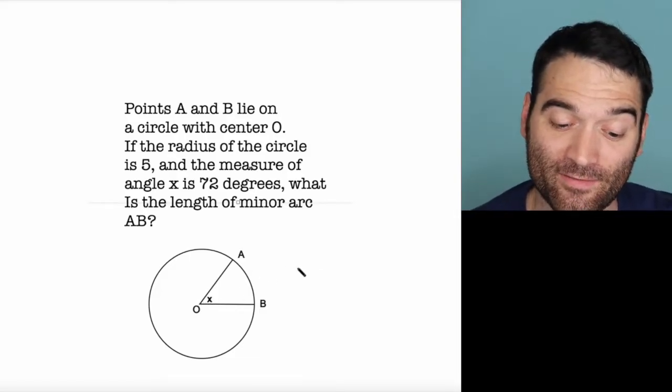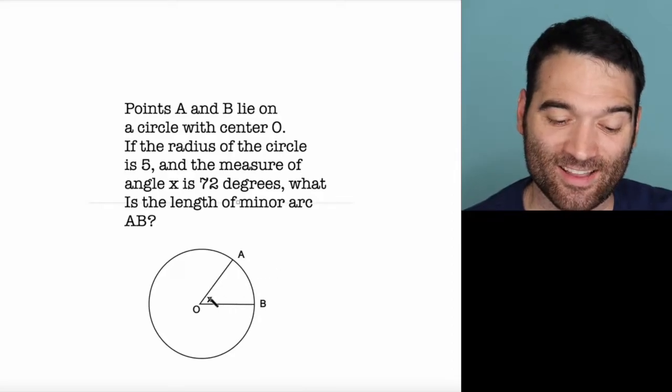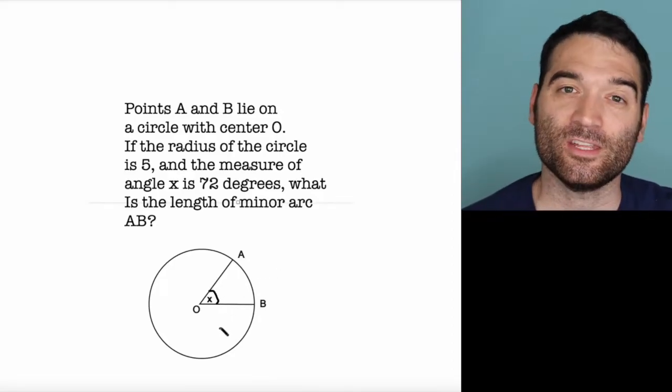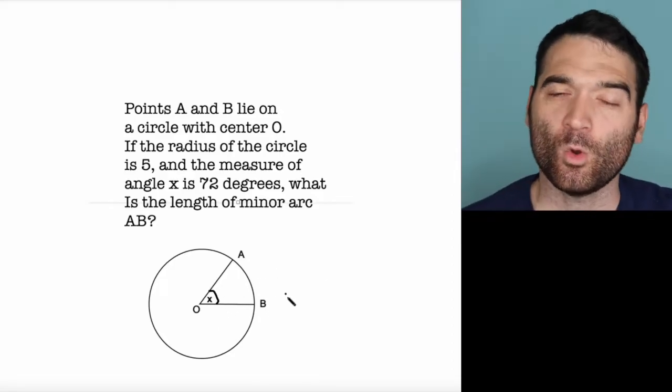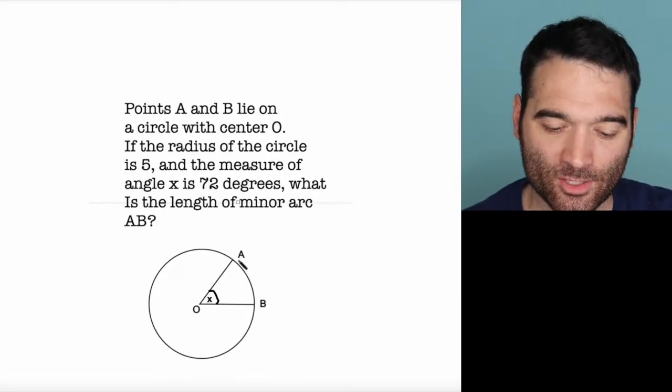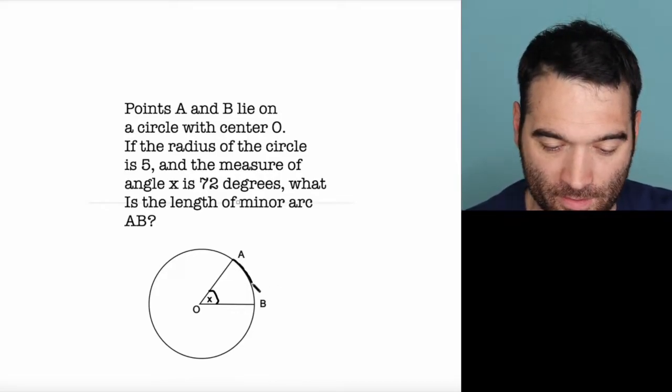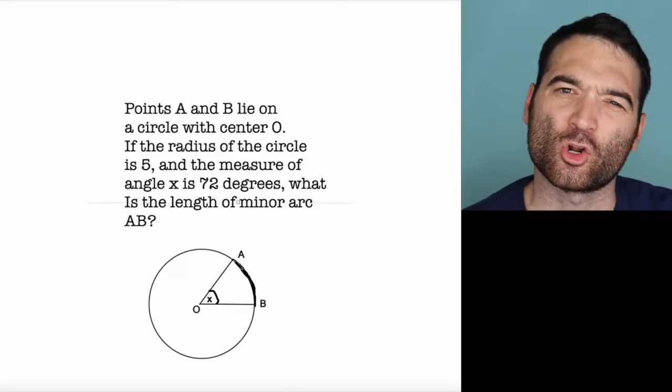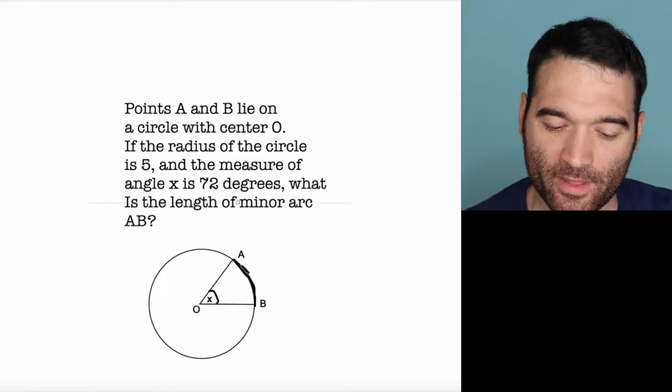If the radius of the circle is 5 and the measure of angle X is 72 degrees, so that right there is 72 degrees, what is the length of minor arc AB? Minor arc AB refers to this piece right here. Call it like the crust of the pizza. I'm looking for this distance.